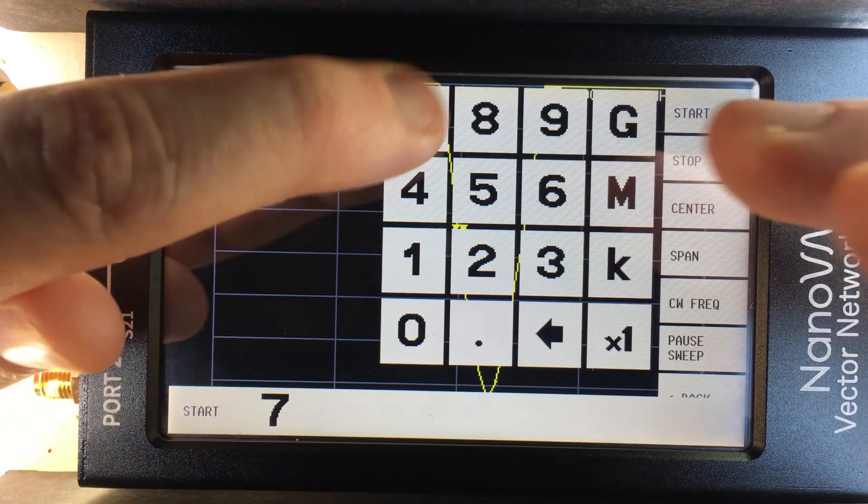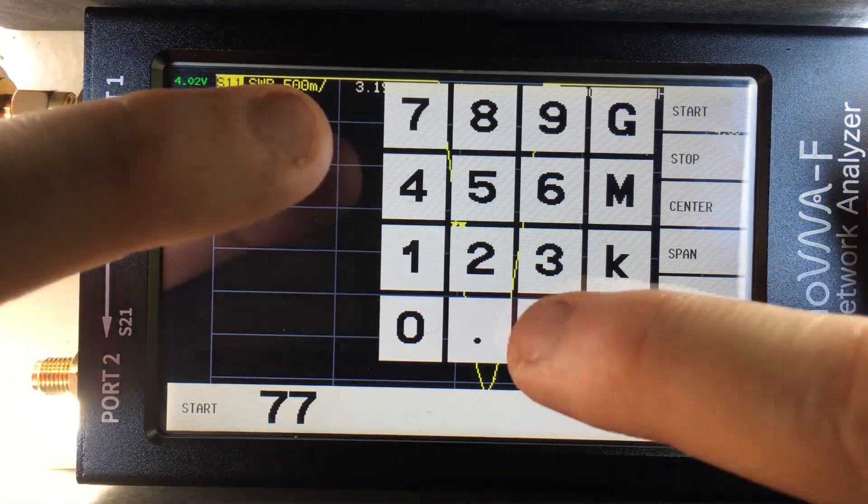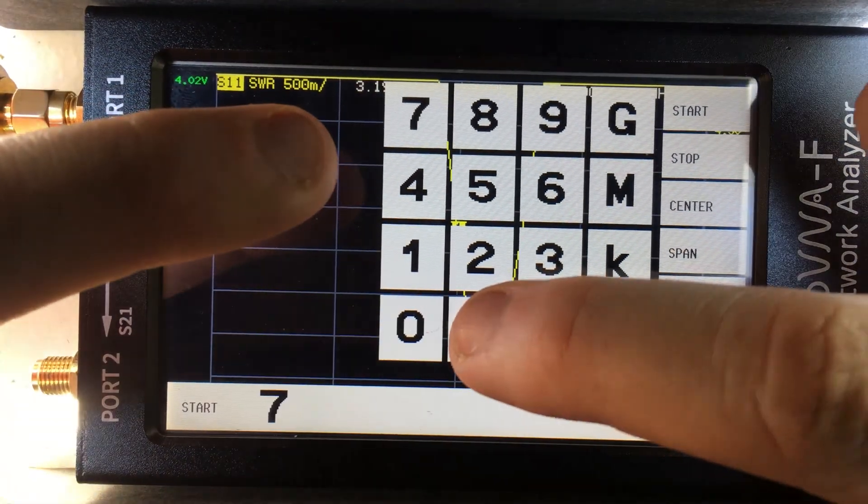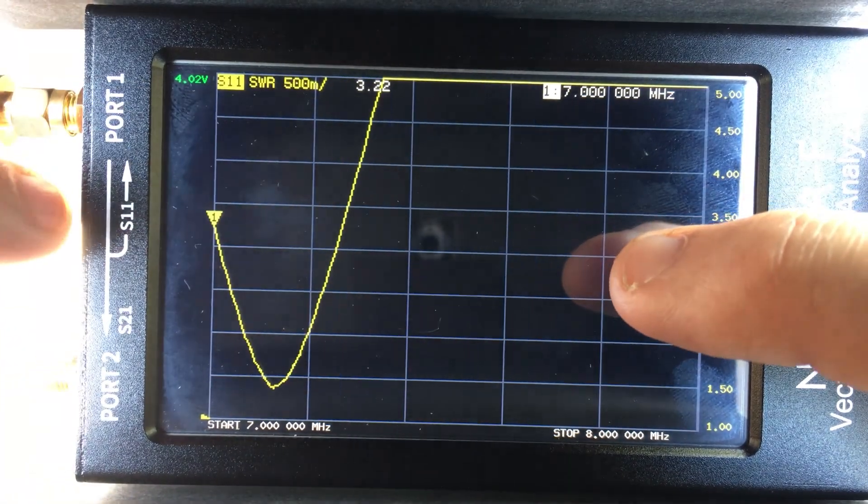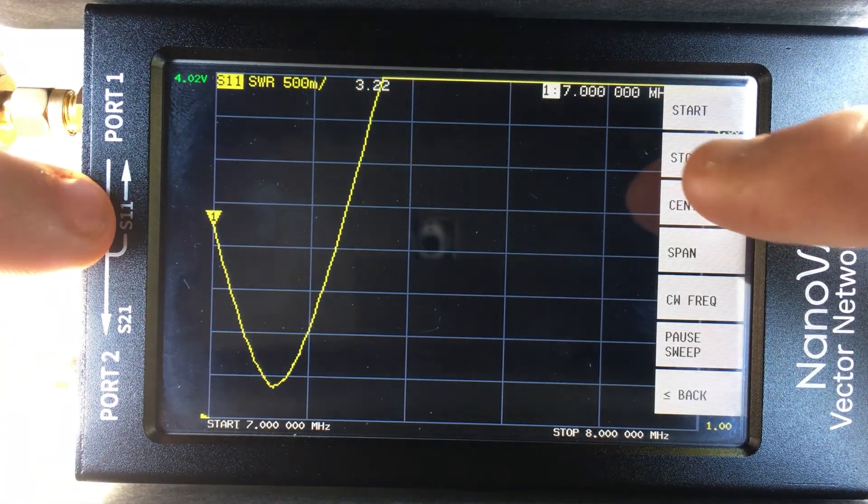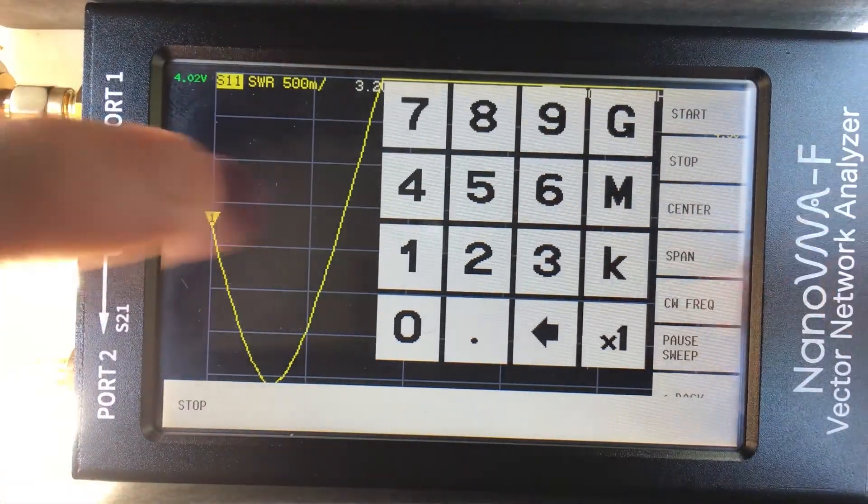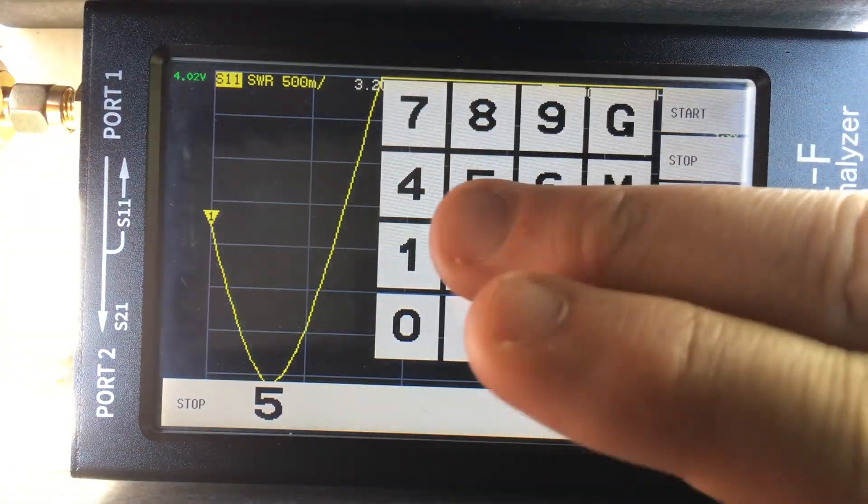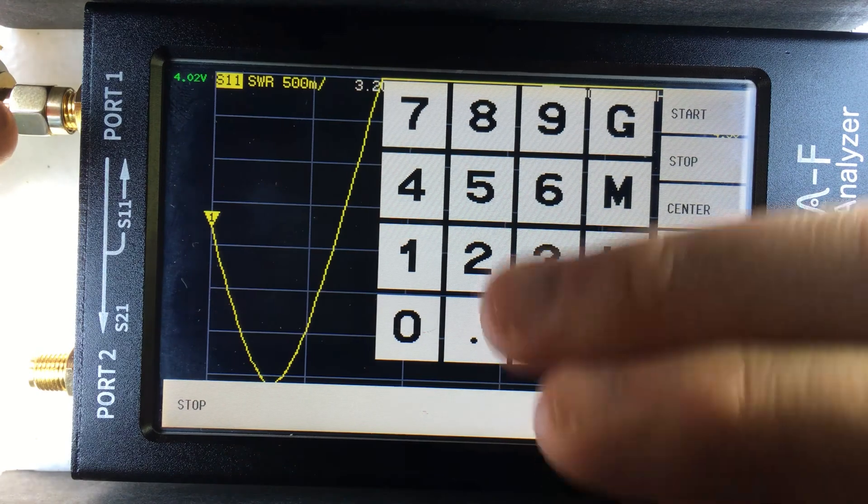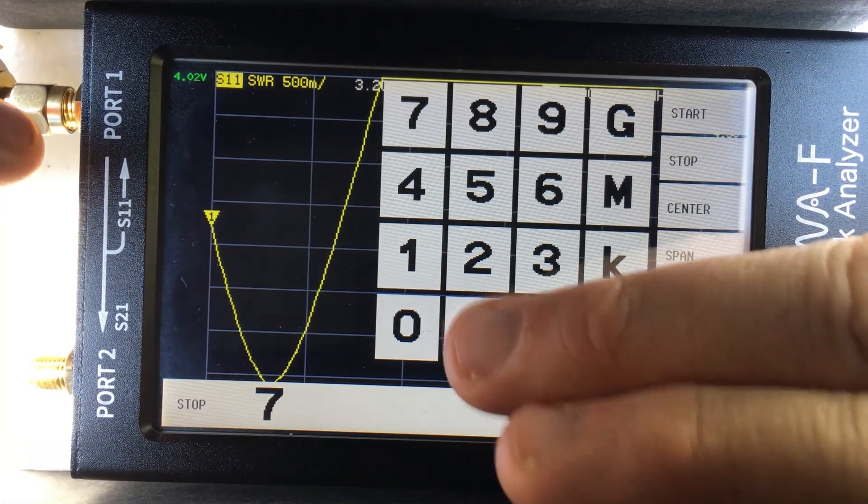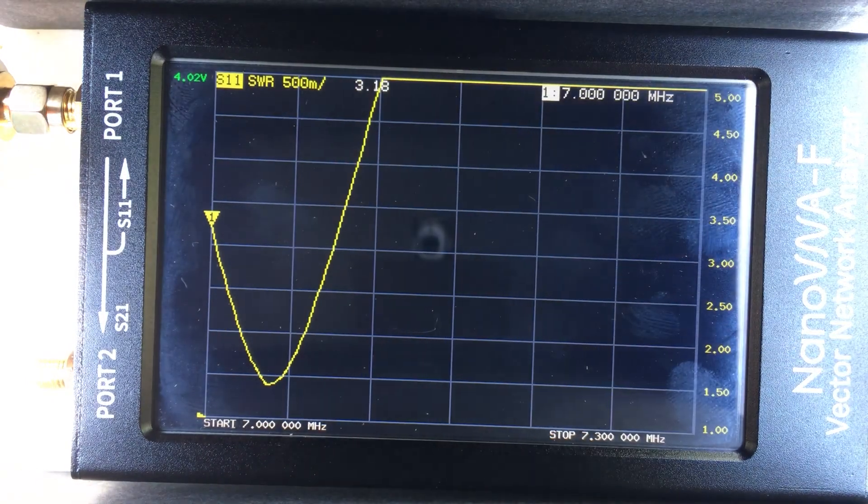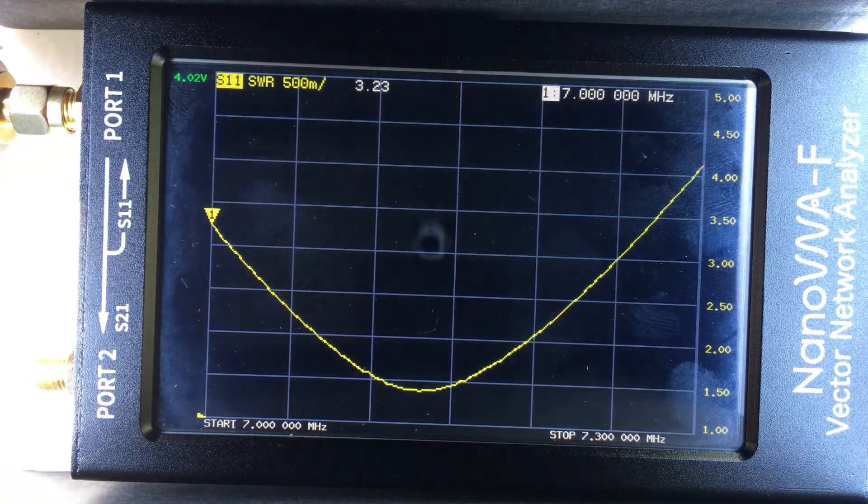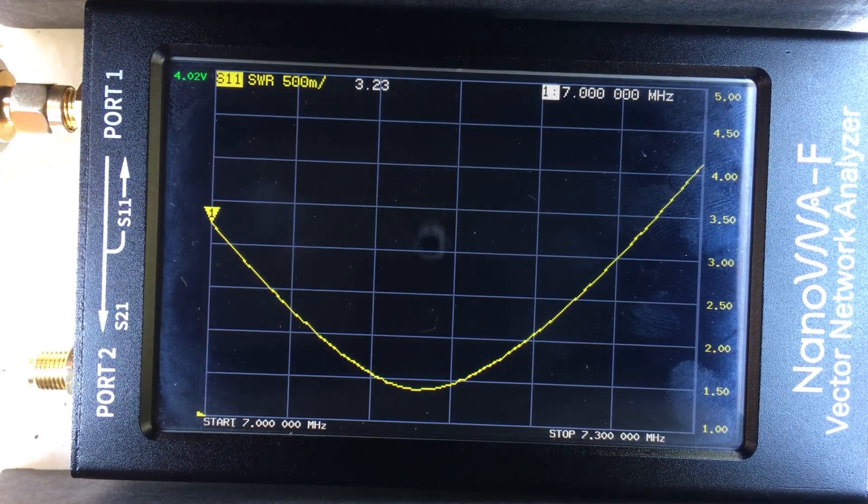And there I'm starting to see a much more accurate representation. And that's because it's taking 100 points of measurement between 6 megahertz and 8 megahertz. So if I wanted to see just between 7 and 7.3, what I could do is I could put that in. So if I put in 7, not 77, just 7 megahertz. And I'm going to do a stop of 7.3 megahertz. And look at that graph.